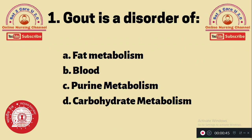Question 1: Gout is a disorder of — A. Fat metabolism, B. Blood, C. Purine metabolism, D. Carbohydrate metabolism. Gout is a disorder of purine metabolism. The correct answer is C.